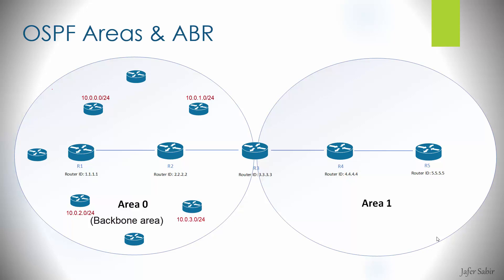For example, you have subnets 10.0.0.0/24, 10.0.1.0/24, 10.0.2.0/24, and 10.0.3.0/24 — all slash 24 subnets. Rather than advertising all four networks to Area 1, the ABR can summarize them with a /22 mask: 10.0.0.0/22, which covers the range 10.0.0.0 to 10.0.3.255. This summary address is advertised to Area 1, so it doesn't need to worry about the topology of Area 0 or whether the 10.0.1.0/24 link has gone down — everything in that range simply goes via the ABR.